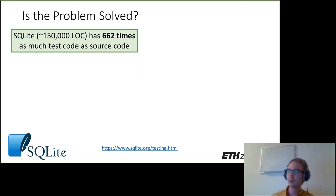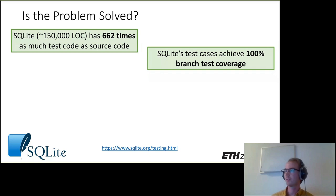Isn't the problem already solved? If we look at what testing processes mature database management systems like SQLite use, it might seem so. Specifically, SQLite has about several hundred times as much test code as source code, which is already quite impressive. SQLite's test cases achieve even 100% branch test coverage. Even better, they achieve 100% MCDC coverage, which is a coverage metric typically used for software development in the aviation industry.